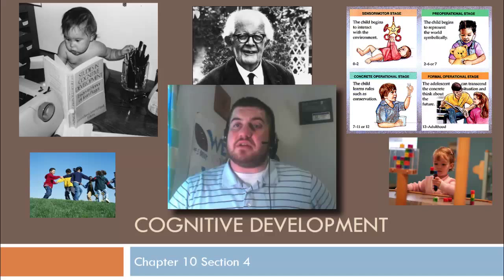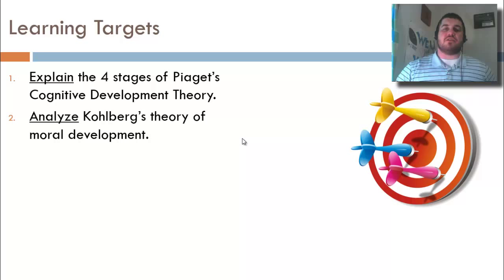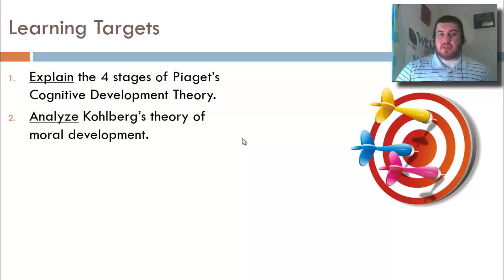Our learning targets for today — just two of them, but they've got quite a few sub-targets underneath them. We're going to explain the four stages of Piaget's cognitive development theory, and we're going to analyze Kohlberg's theory of moral development.